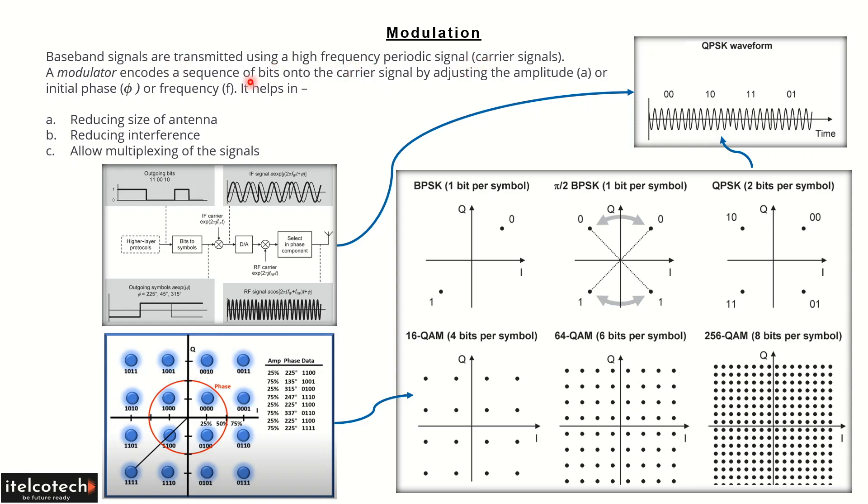These carrier signals, when encoding the information in terms of sequence of bits, will then adjust its amplitude or phase or frequency every time we send the information.